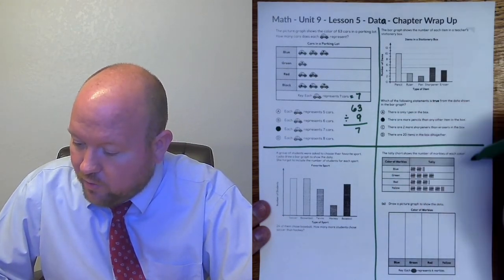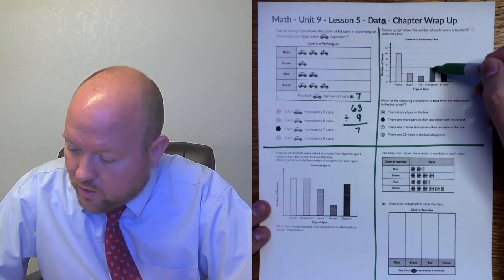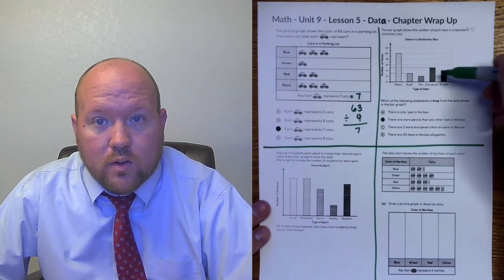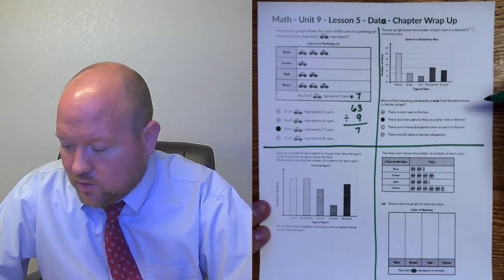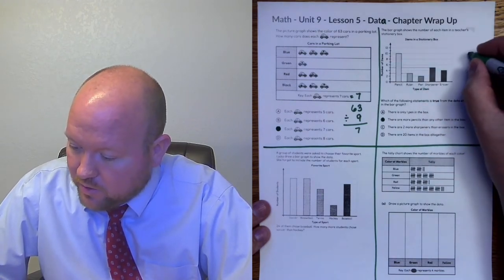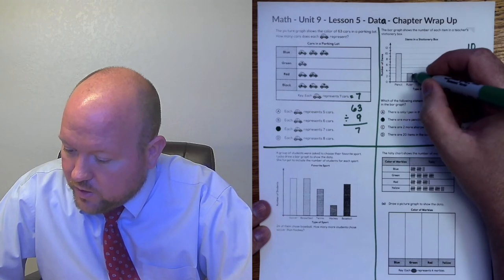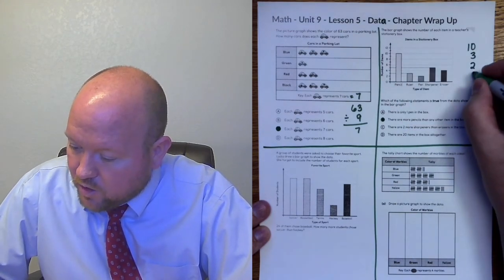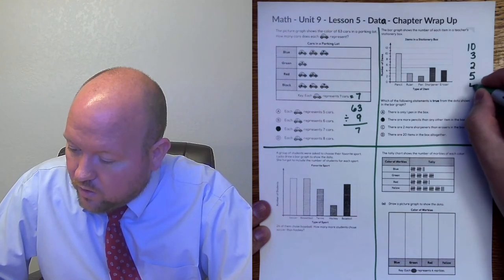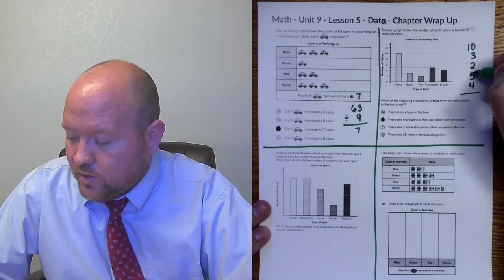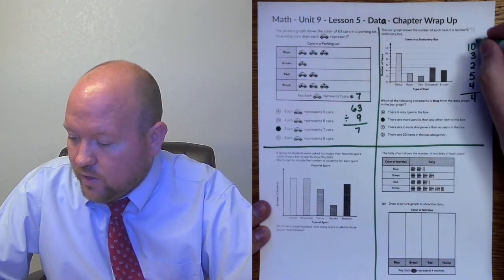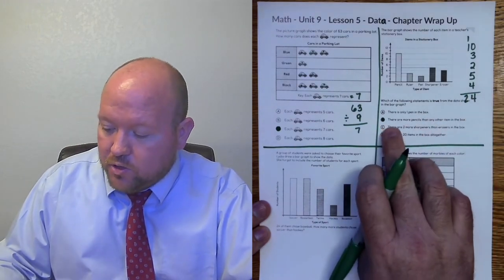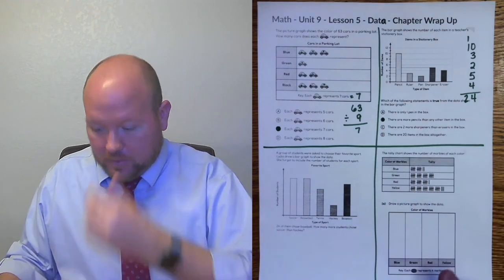There are two more sharpeners than erasers. So here we come up, we see that there are five sharpeners, but there's four erasers. Well, that means there's only one more, not two more, so that's not true. There are 20 items in the box all together. So here we want to add them up. So here we see there's 10 pencils. Here we see there's three rulers. Here we see there's two pens. Here we see there's five sharpeners. And here we see there's four erasers. Three plus two is five. Five plus two is 10. 10 plus four is 14. One plus one is two. So there's 24 items, not 20. So the only one that was true was that there are more pencils than any other items in the box.